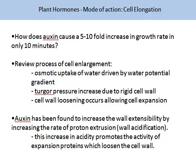Auxin can cause a staggering 10-fold increase in plant growth rate in only 10 minutes. To understand how, we need to review the role of cell elongation. Osmotic uptake of water is driven by a water potential gradient; turgor pressure increases due to the rigid cell wall; then cell wall loosening occurs, allowing expansion. Auxin has been found to increase wall extensibility by increasing the rate of proton extrusion, or wall acidification. This increase in acidity promotes the activity of expansin proteins, which then loosen the cell wall.